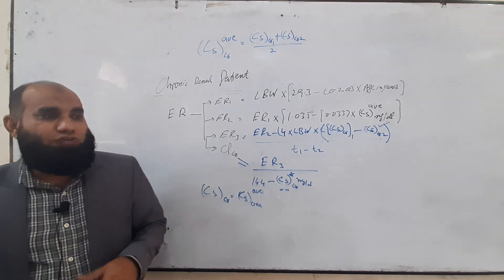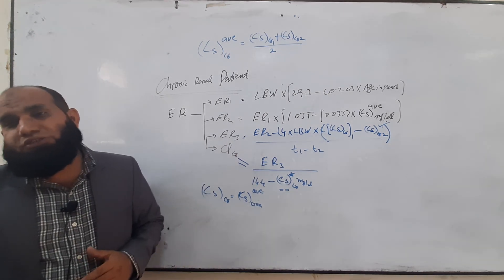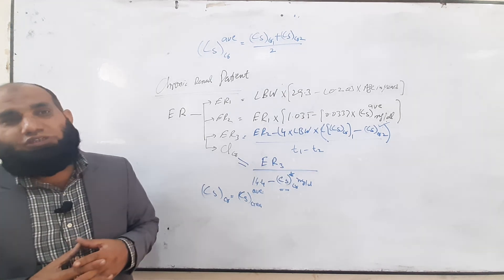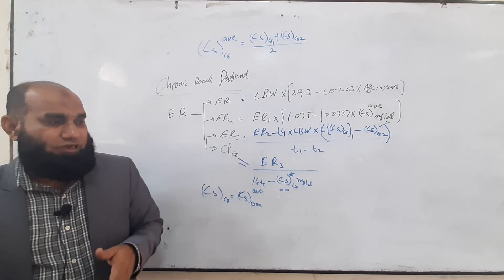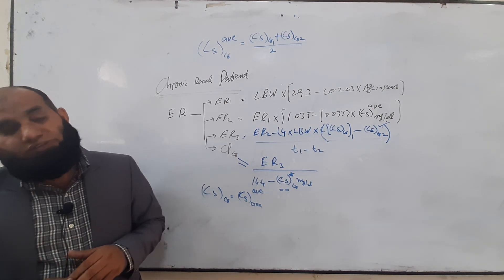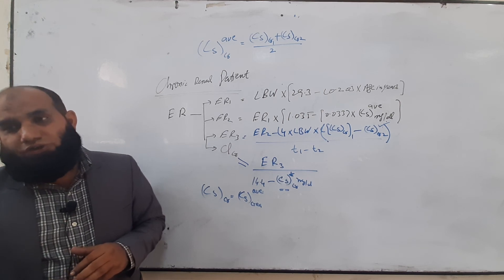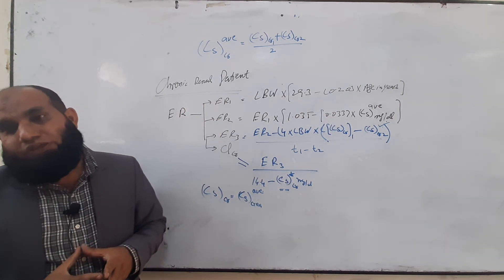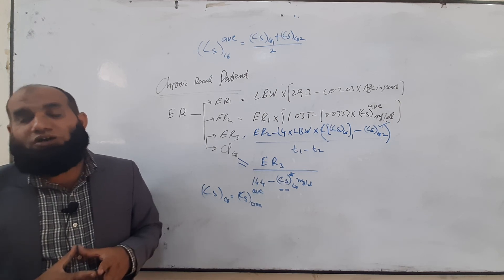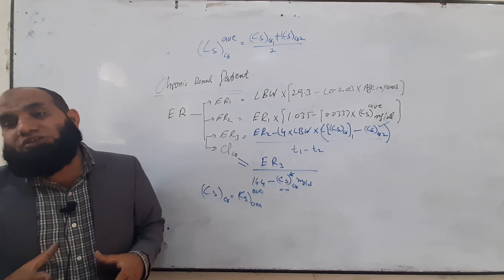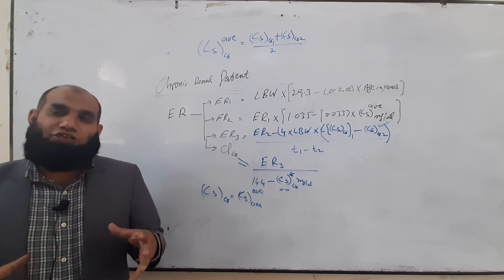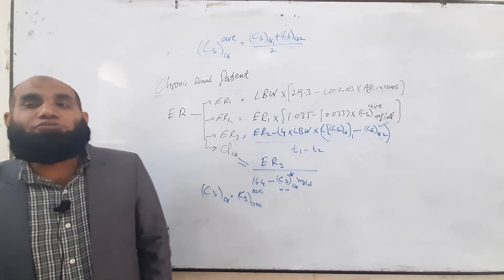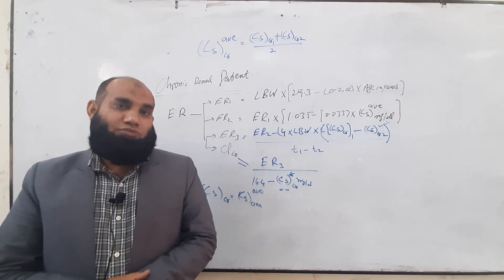For obese patients, we first check lean body weight, then calculate creatinine clearance accordingly. For chronic renal failure patients, we follow the ER1, ER2, ER3 extraction ratio method to obtain creatinine clearance. In the next class we will check how nomograms are used and how doses of drugs are adjusted based on creatinine clearance changes. Thank you very much.